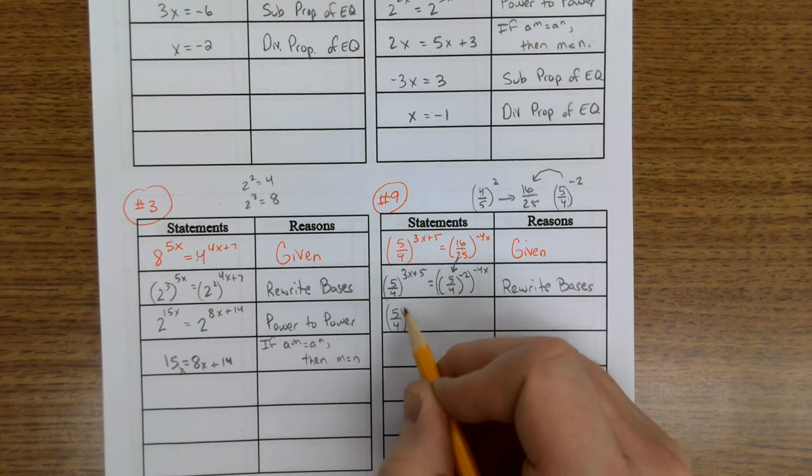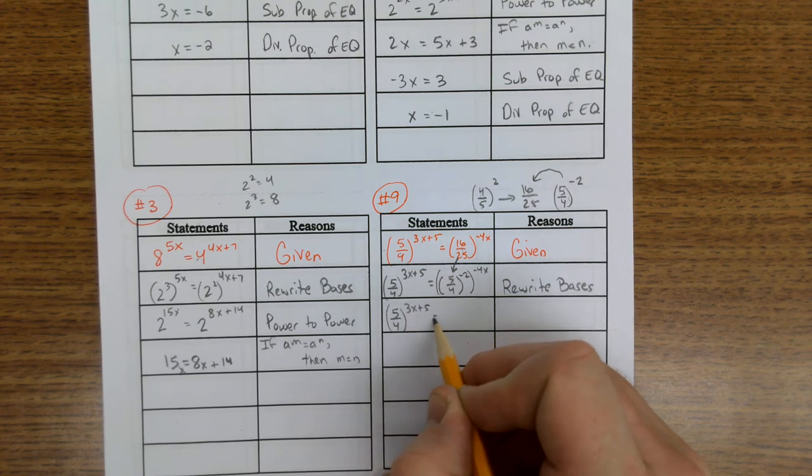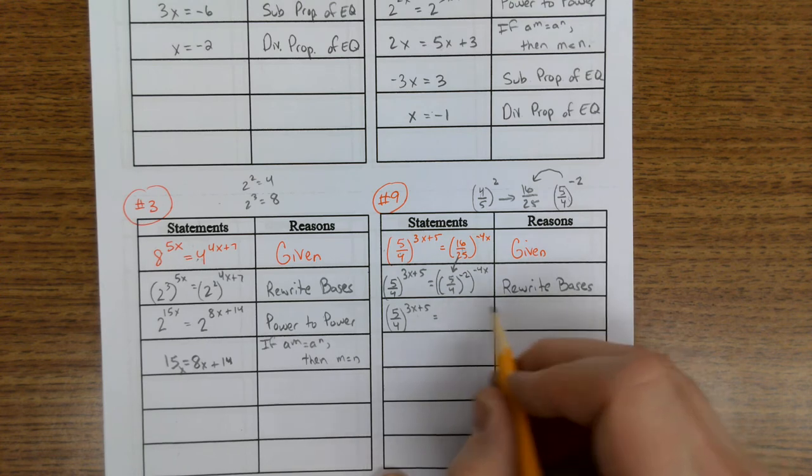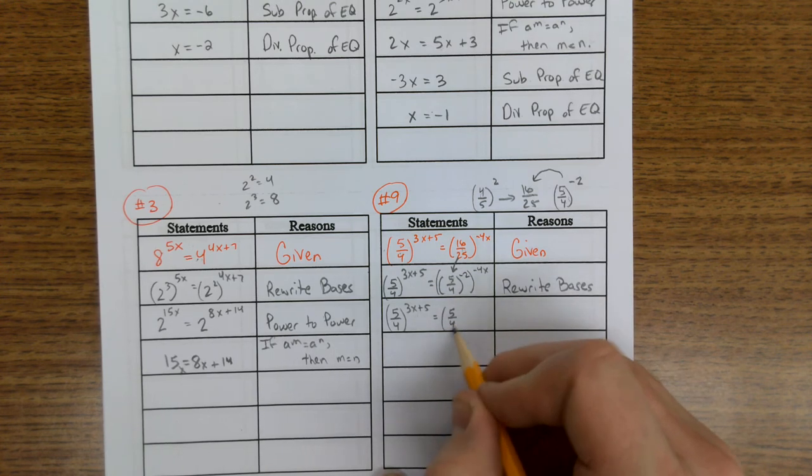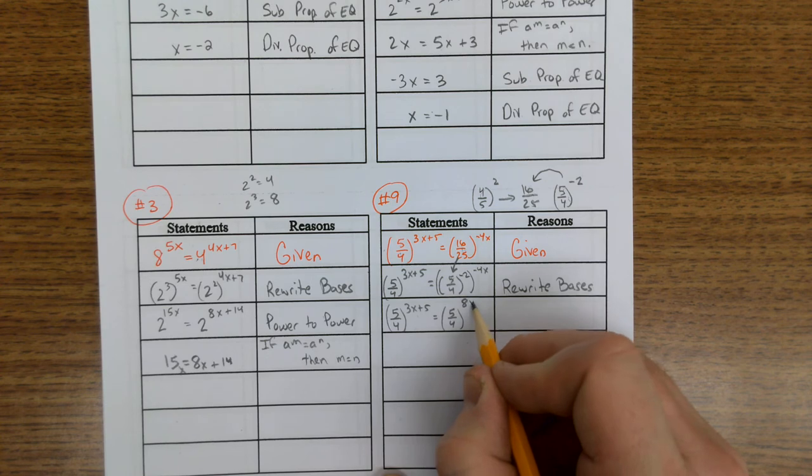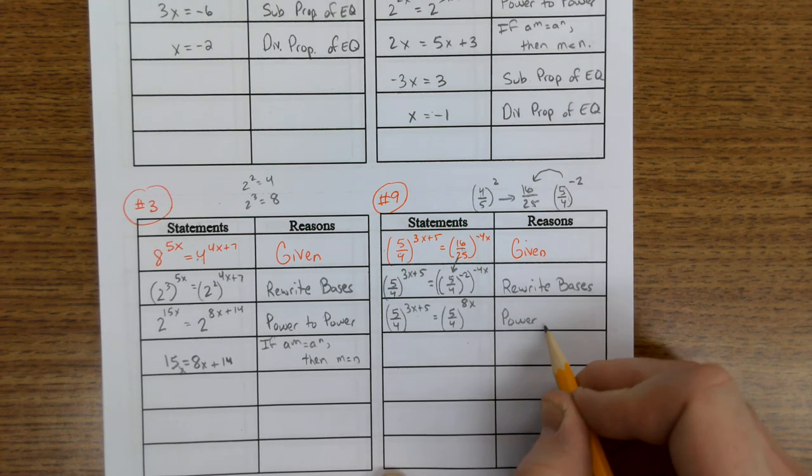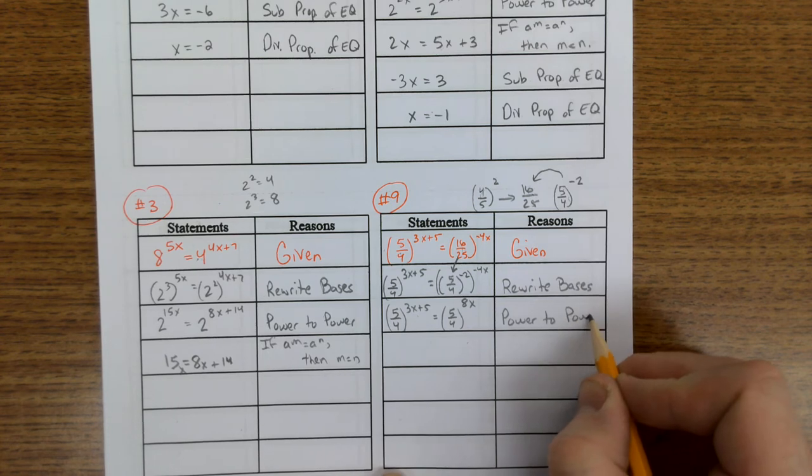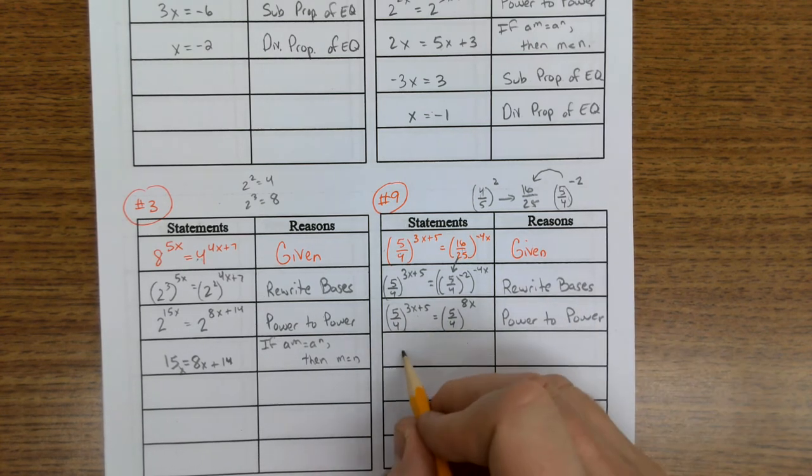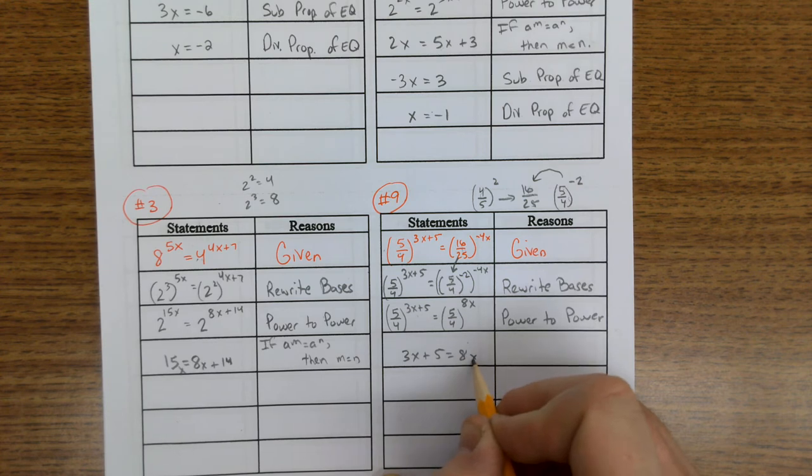Let's leave this one alone. Let's use power to power and clean this up over here. So we have 5 fourths to the negative 2 times negative 4x. Multiply that negative times negative is positive 8x. What did I just do there? Power to power. And same base, drop the bases, bring down the exponents.